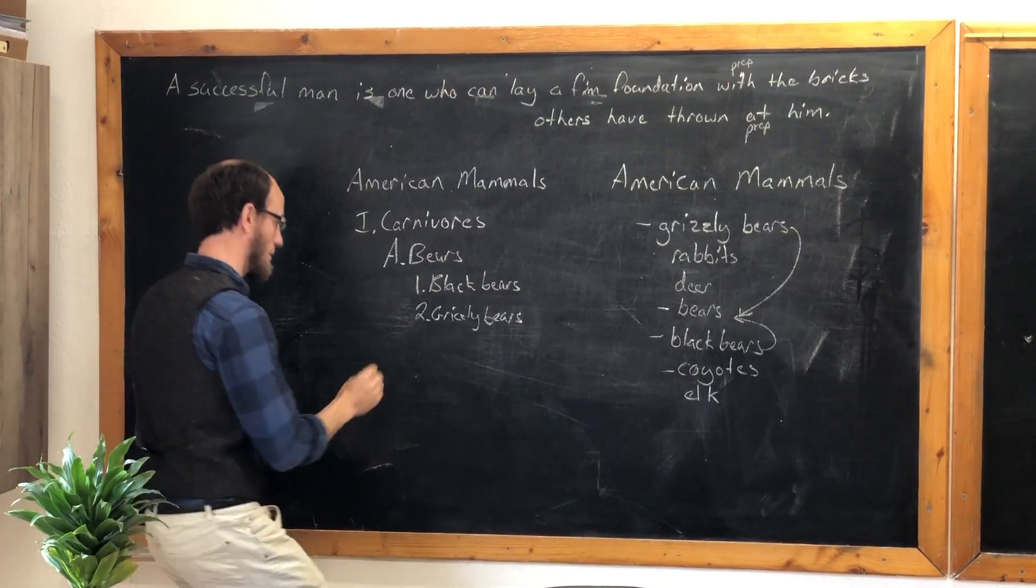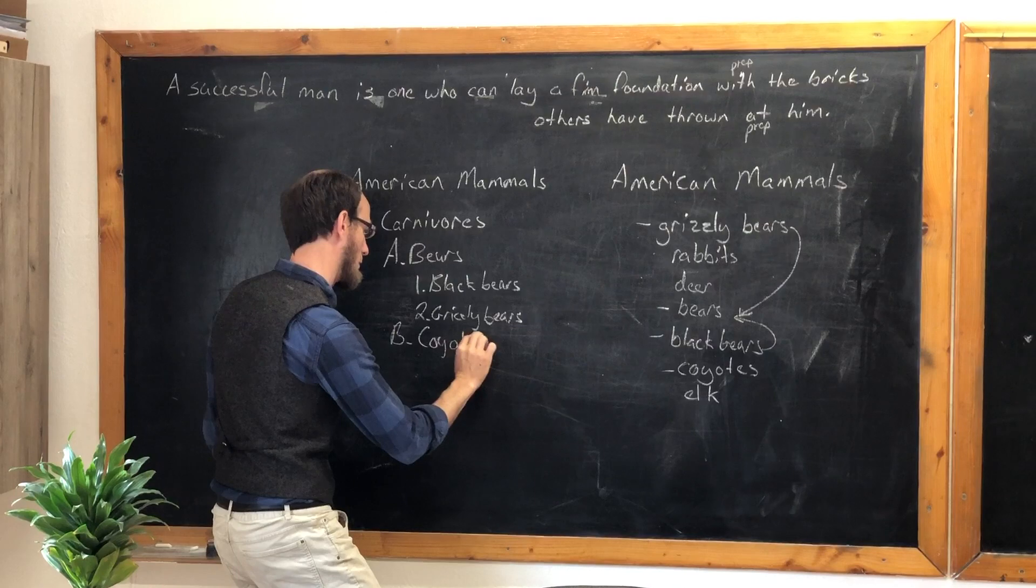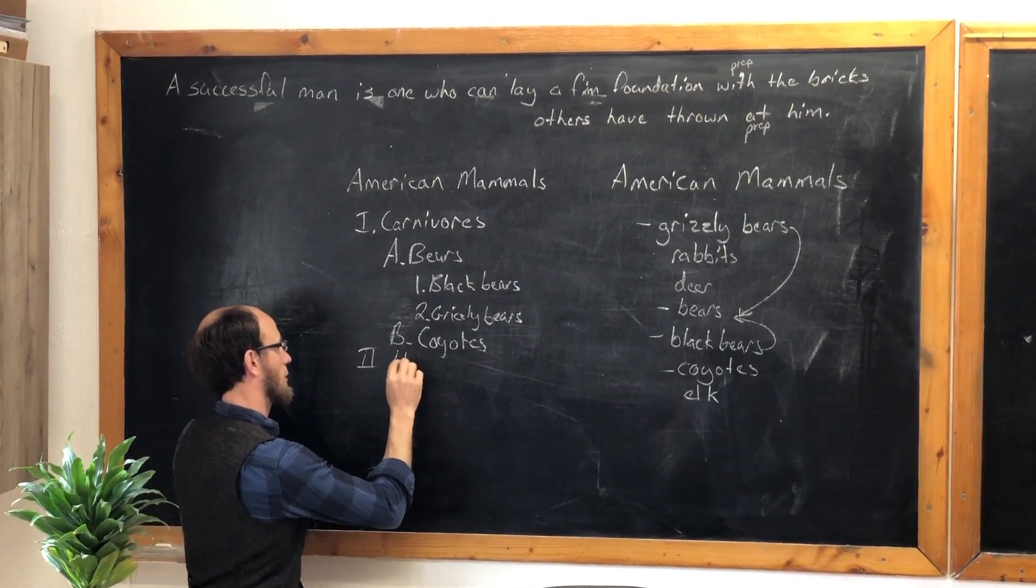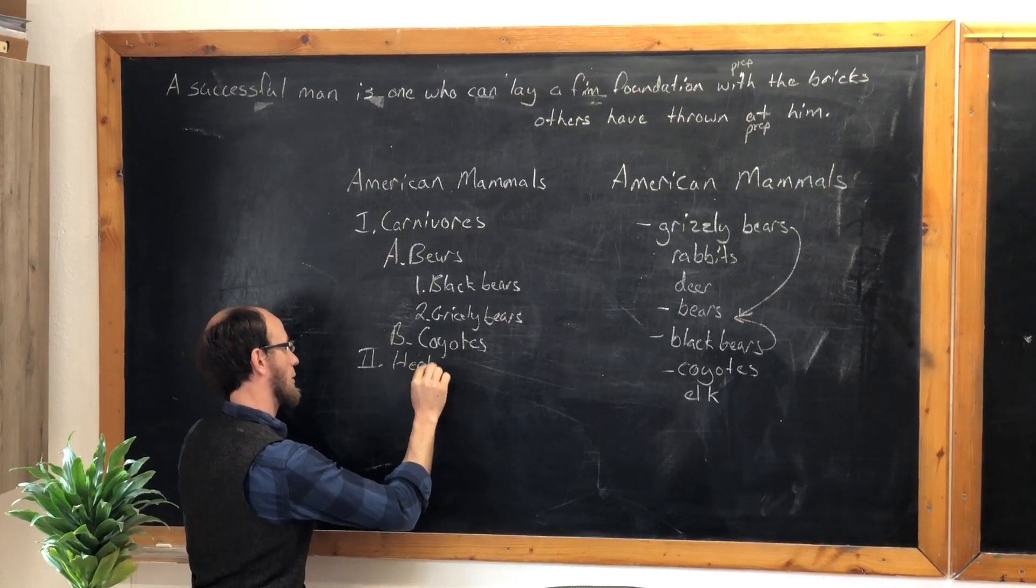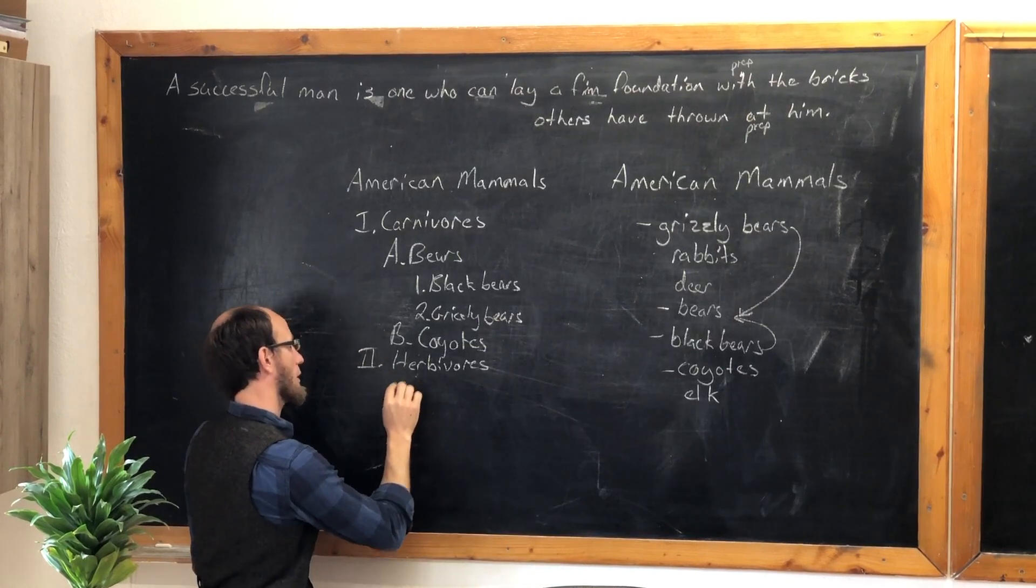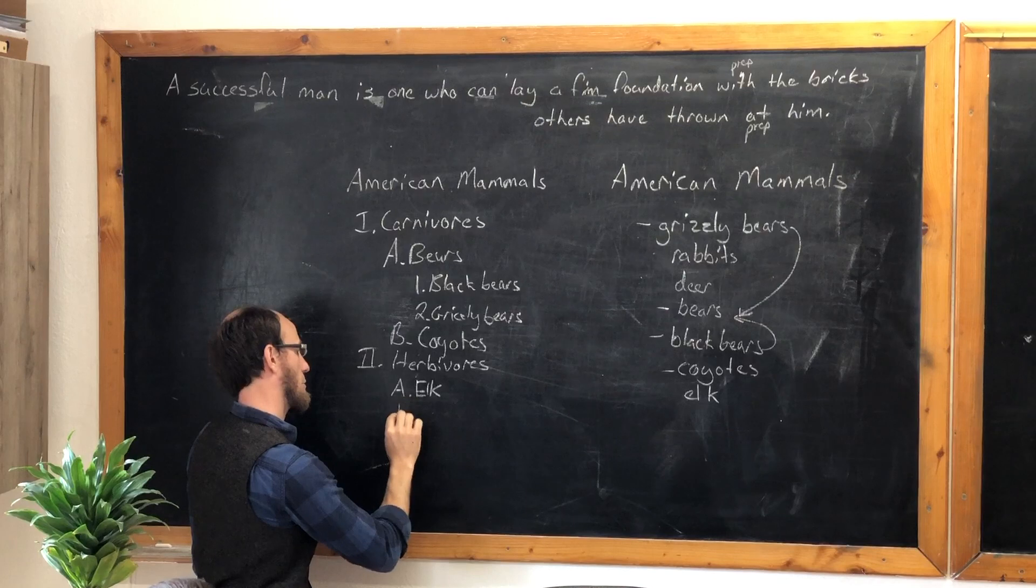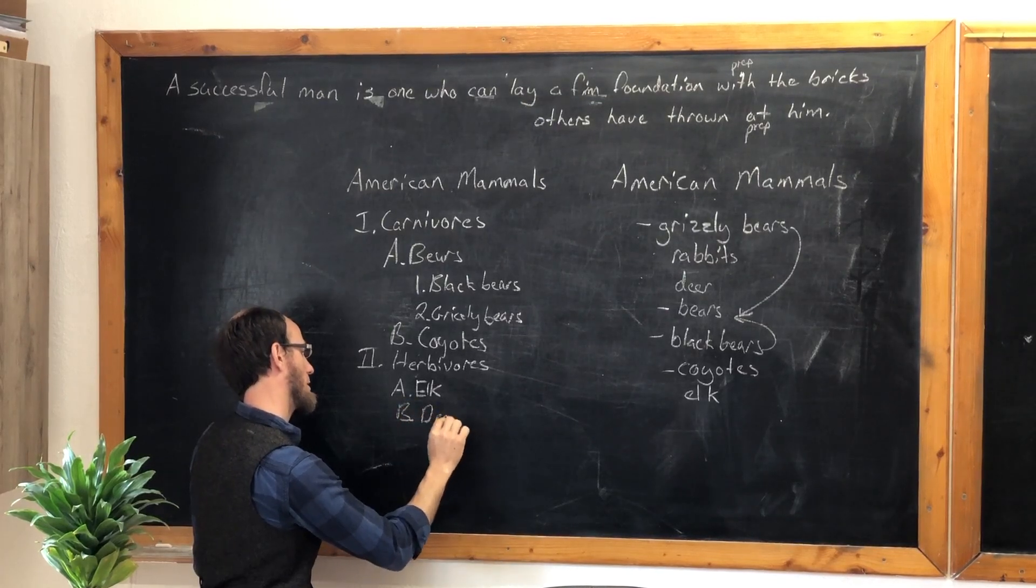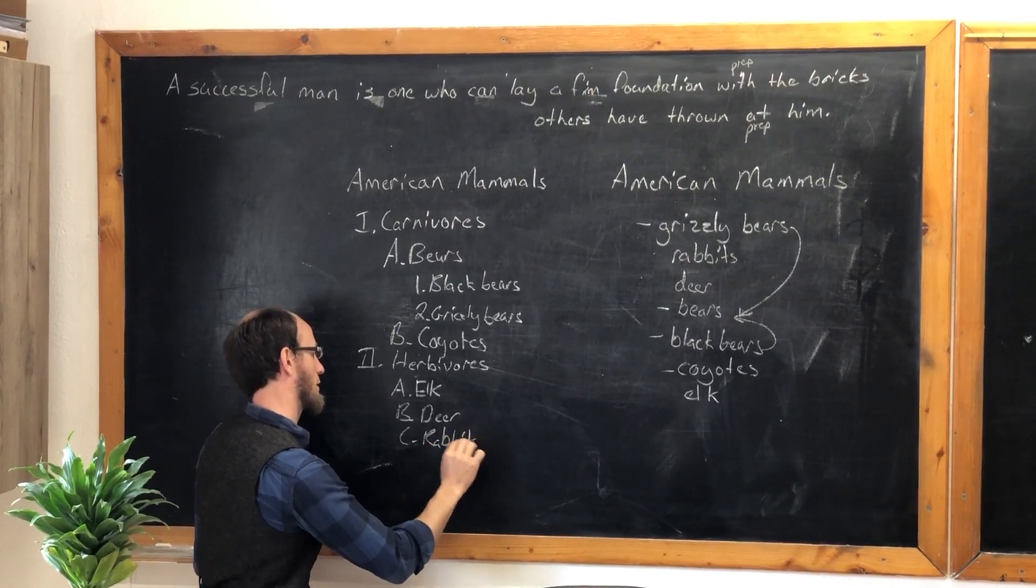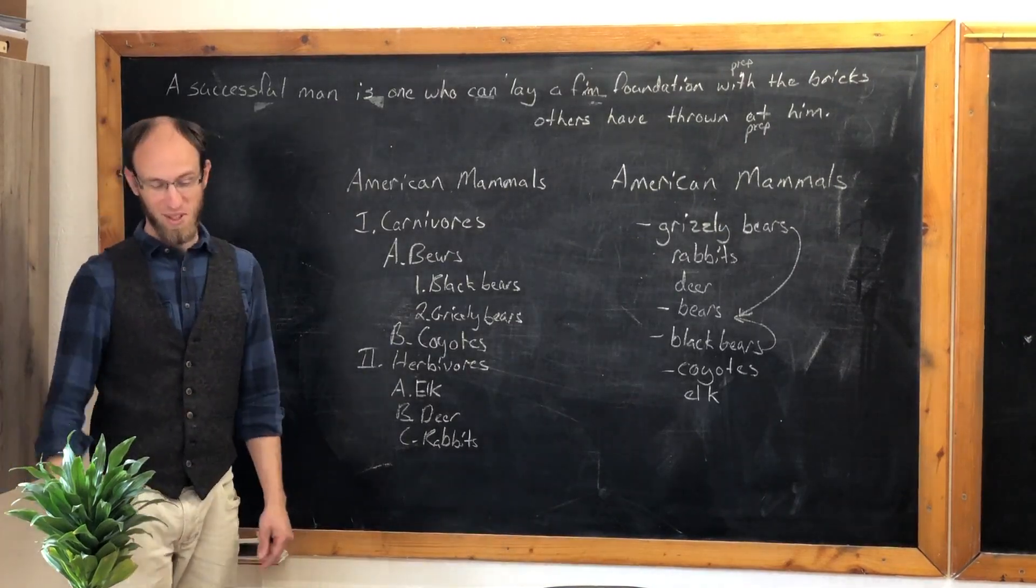And then we'll go B. Carnivores. And then number two, herbivores. And so we're going to go through C. Ribbons. Okay. Lovely. A nice, orderly way to make an outline. Carry on with your lesson. Thank you.